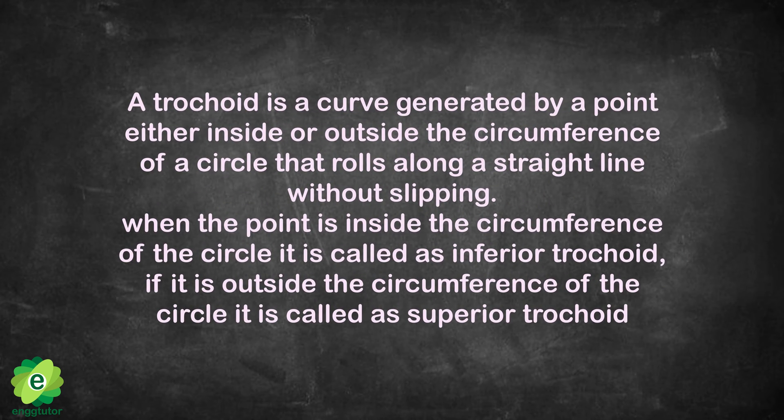A trochoid is a curve generated by a point either inside or outside the circumference of a circle that rolls along a straight line without slipping.